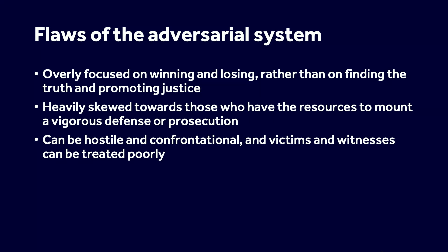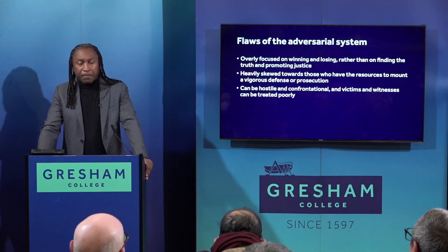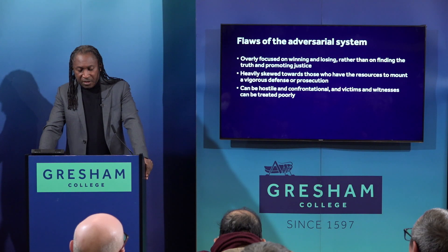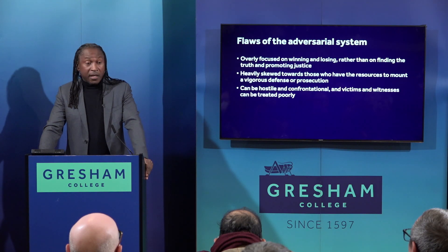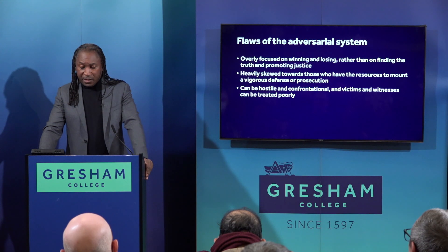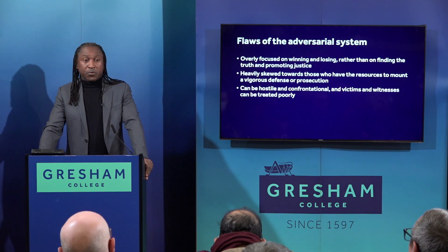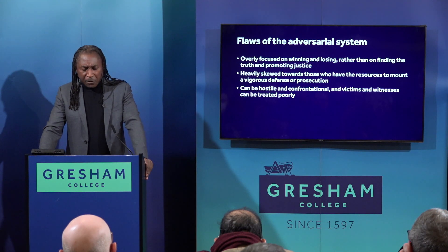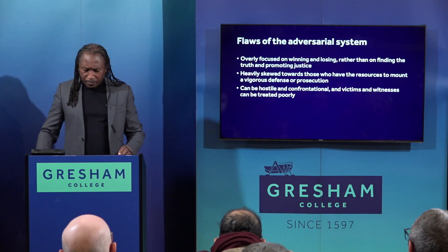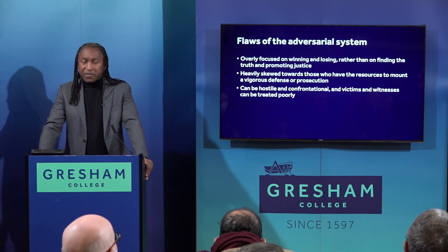Another problem with the adversarial system is that it can be heavily skewed towards those who have the resources to mount a vigorous defence or prosecution. In an adversarial system, the outcome of the case can often be determined by the quality of legal representation that each side is able to secure. This can result in a situation where wealthy individuals or corporations are able to hire the best lawyers and thus have an unfair advantage over less affluent individuals or groups. A further criticism is that it can be adversarial to the point of being hostile and confrontational.